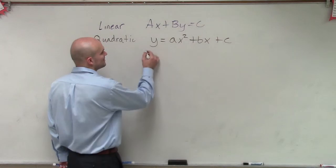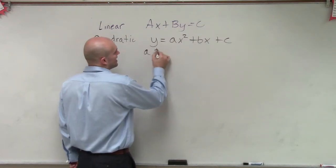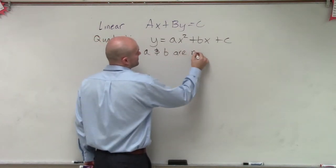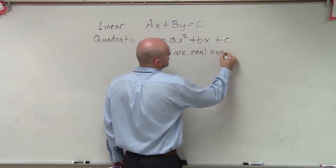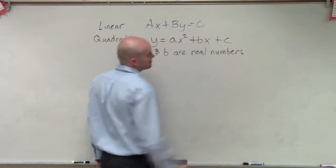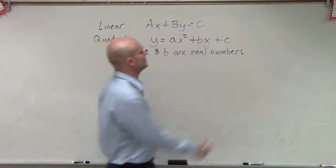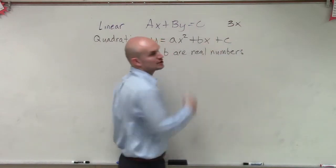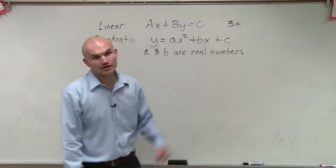So it's important for us to understand that a and b are real numbers. Those are what we call our coefficients. Think of like 3x - 3 is the coefficient of x. So a and b are going to be our coefficients.